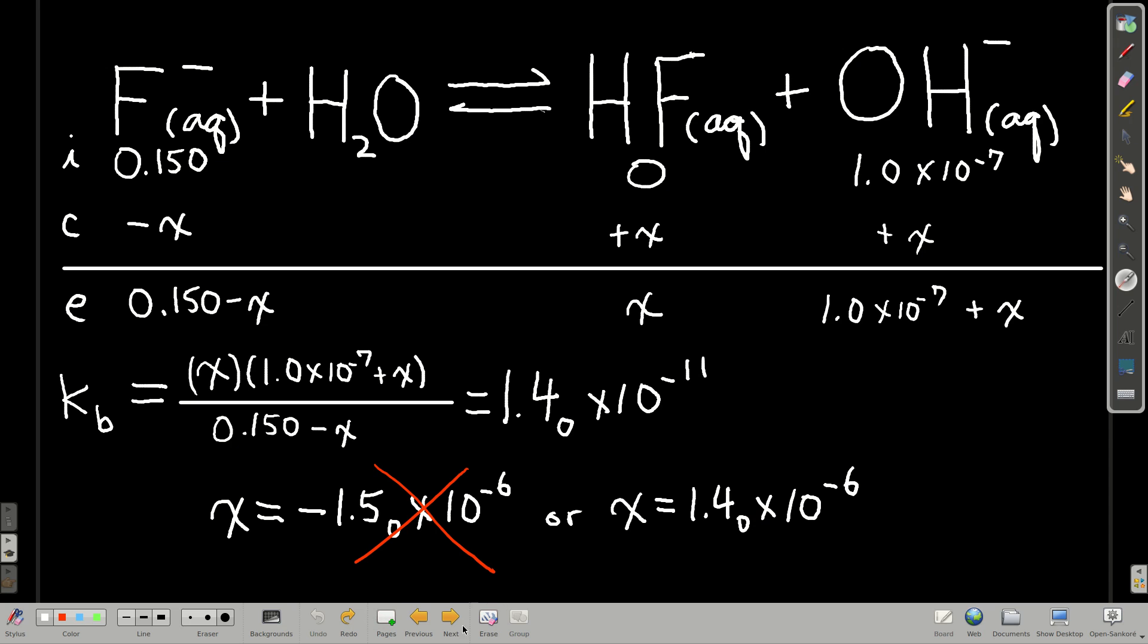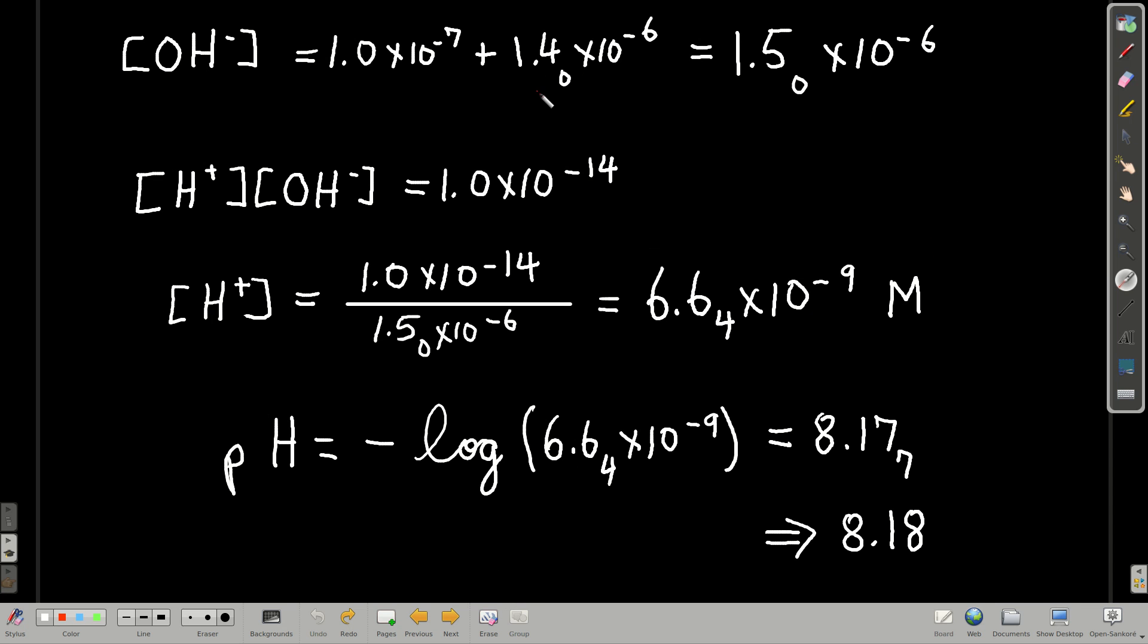Now, okay, we want to find the pH. So, that means we need to know the hydroxide ion concentration, which is going to be 1 times 10 to the minus 7th plus this, plus x. So, we add them together. Get 1.5 times 10 to the minus 6th. To get the pH, I'm going to take the negative log base 10 of the hydrogen ion concentration. So, the way I'm going to do it is I'm going to use KW to get the hydrogen ion concentration, knowing the hydroxide ion concentration. I take KW over the hydroxide ion concentration, and I get 6.6 times 10 to the minus 9th molar for my hydrogen ion concentration. Take the negative log base 10 of that, and we get our pH, 8.18. Okay, there you go.